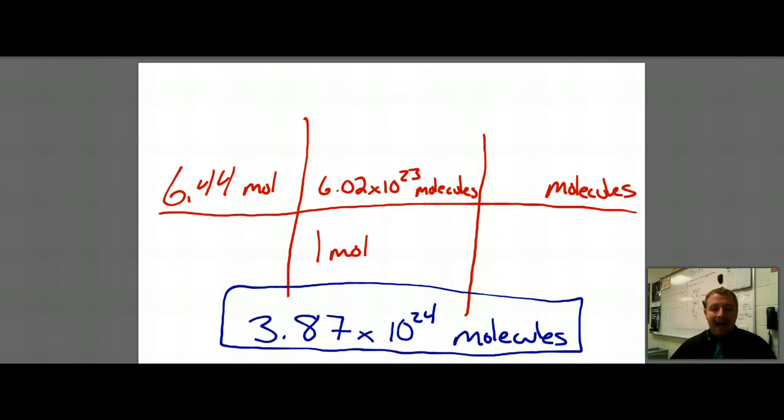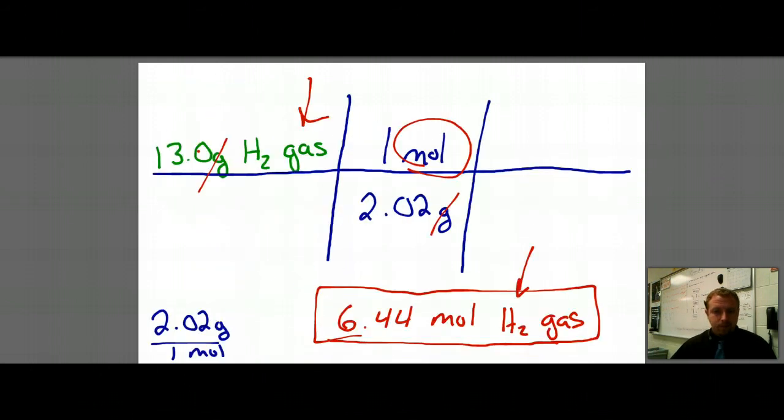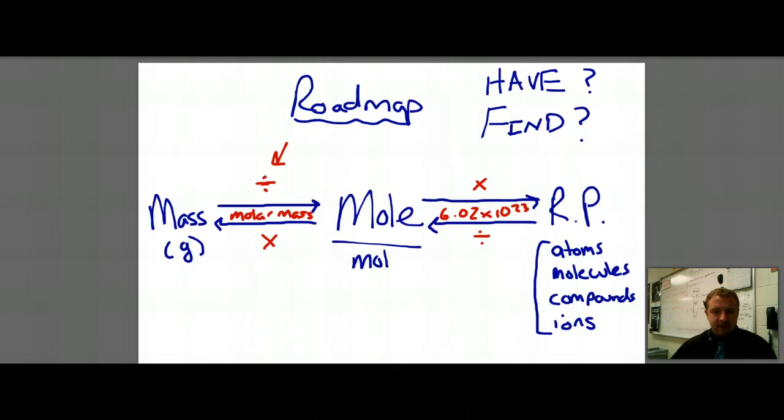However, you cannot make the jump. If we go back to our roadmap, we can see this. You cannot convert between mass and particles. It cannot be done. There is no conversion. You have to go through moles. And that's what makes the mole so useful to us.